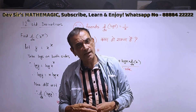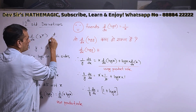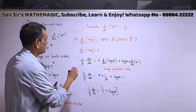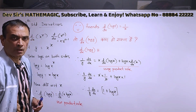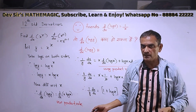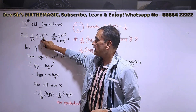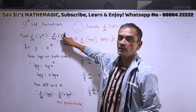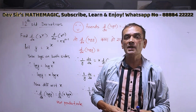We have the formula for x raised to n: d by dx of x raised to n. What does the formula say? n comes in front, x raised to n minus 1. Here, n is a constant — if you have x raised to 5, then it becomes 5 times x raised to 5 minus 1. Now what is the difference between x raised to x and x raised to n? If you have a constant in the exponent, that constant comes in front times x raised to n minus 1. This is the 11th standard formula which we know.